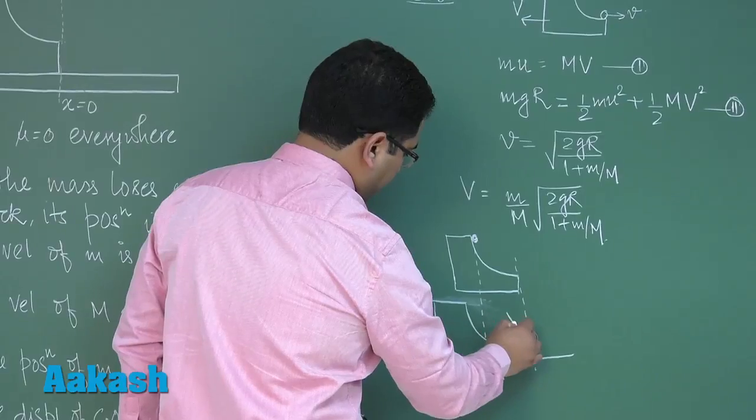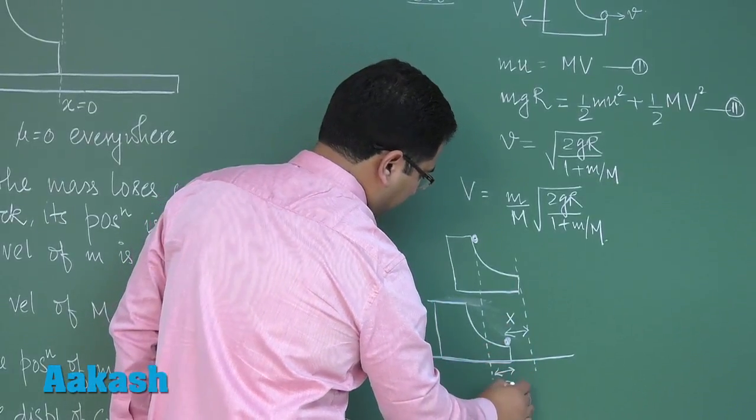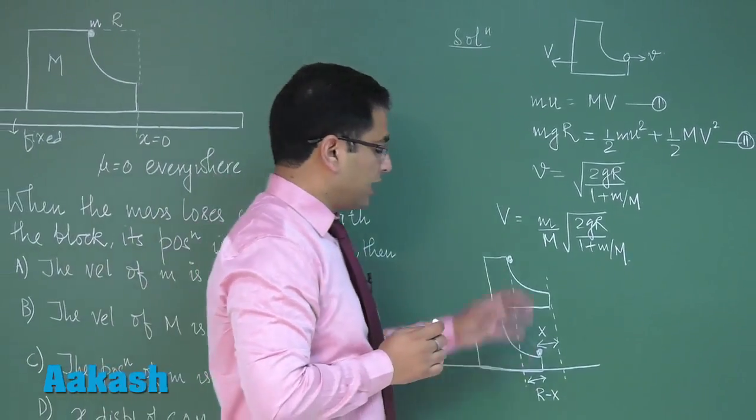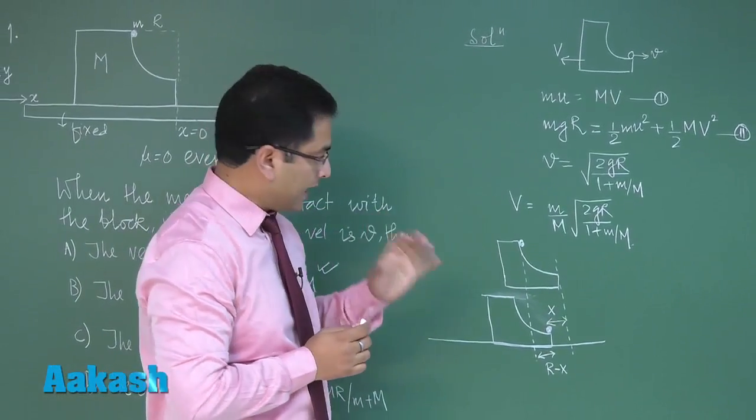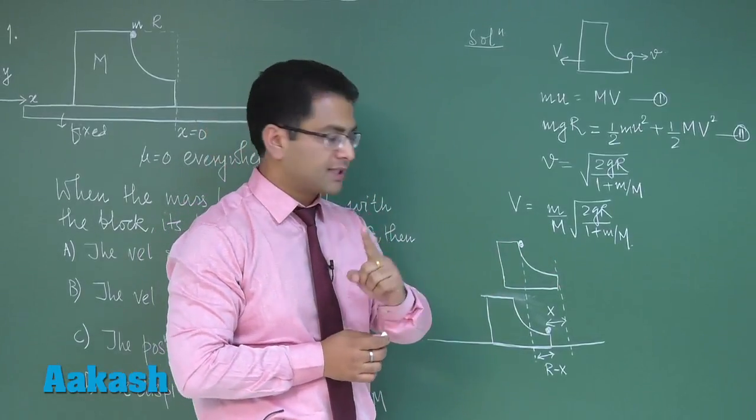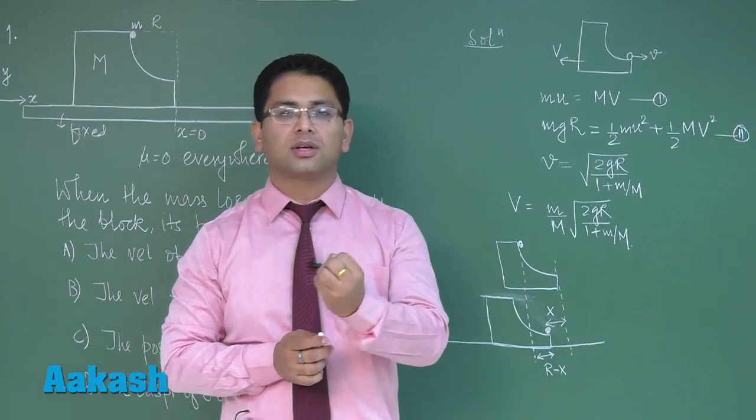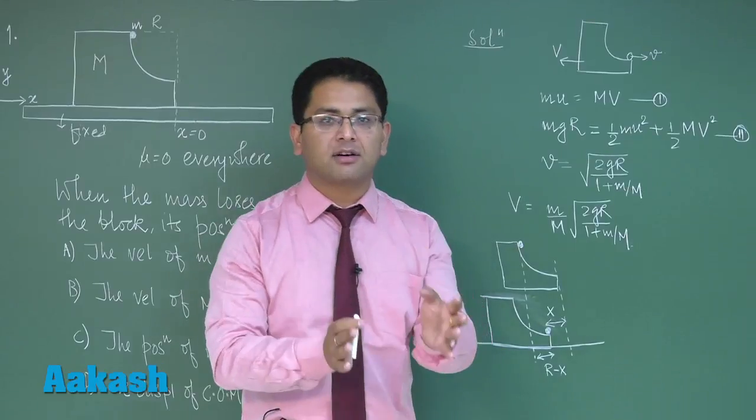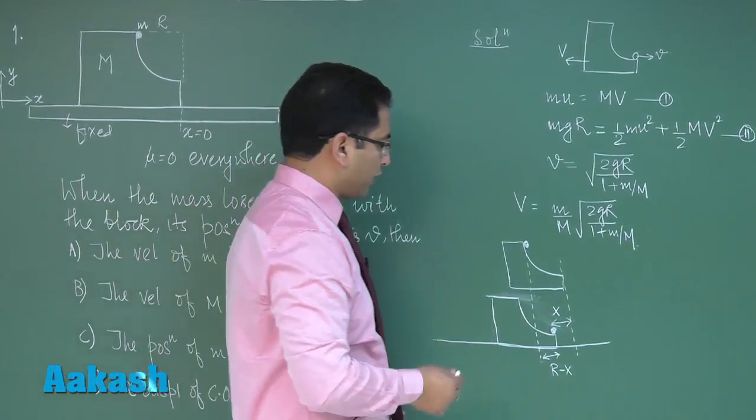Now what I'll do is let's try to, if I call this distance to be capital X, quite obviously this distance would be R minus capital X. Now another notable feature: initially center of mass is at rest and there is no net force along X direction when we take the system as the particle and the block.